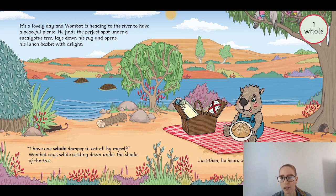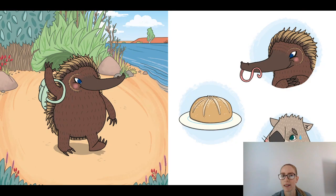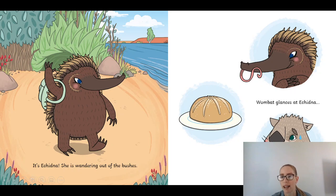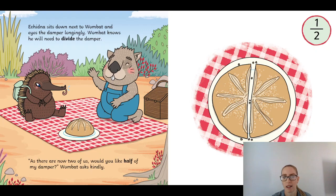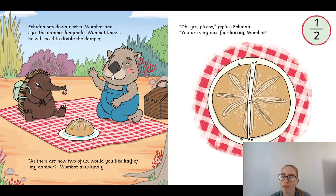Just then he hears one animal squeaking: 'G'day!' It's Echidna — she's wandering out of the bushes. Wombat doesn't look very happy. Wombat glances at Echidna and then at his damper. Echidna sits next to Wombat and eyes the damper longingly. Wombat knows that he'll need to divide the damper — and we know divide means share. 'As there are two of us, would you like half of my damper?' Wombat asked kindly. 'Oh yes please,' replied Echidna. 'You are very nice for sharing, Wombat!'